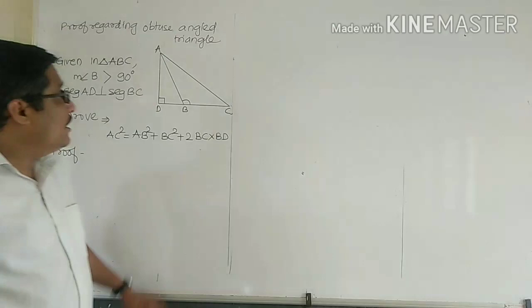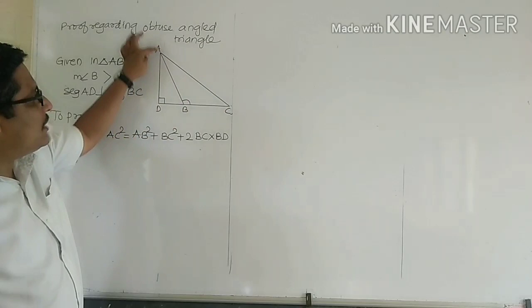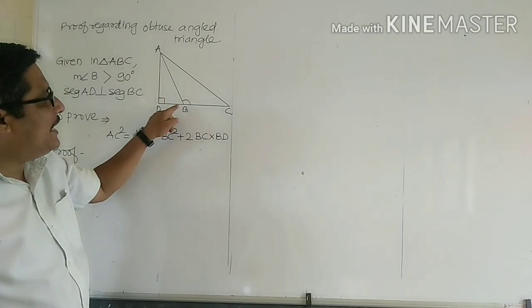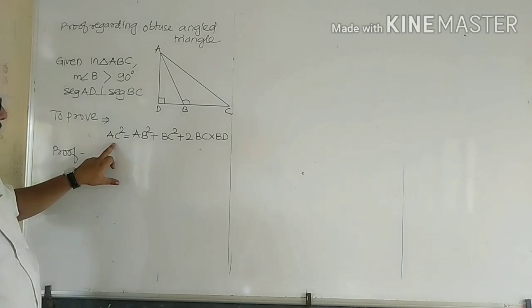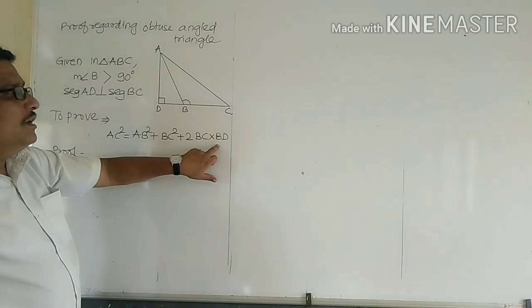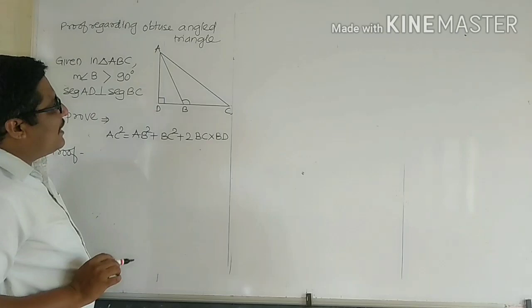Now, the other proof is regarding an obtuse angle triangle. Here, triangle ABC is an obtuse angle triangle, and AD is a perpendicular drawn on the extension of side BC. The obtuse angle is mentioned, and AD is perpendicular to BC. We have to prove: AC² = AB² + BC² + 2BC × BD.